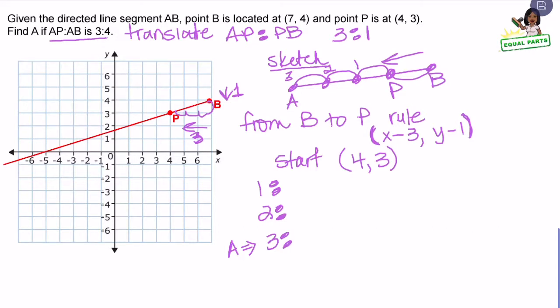I see that I have to go to the left in order to get to point A. So the last point that I find will be the value or the ordered pair for A. So I'm going to start at point P, which is at four and three. And I'm going to apply my rule X minus three and Y minus one to each one of the ordered pairs until I get to the desired ordered pair.